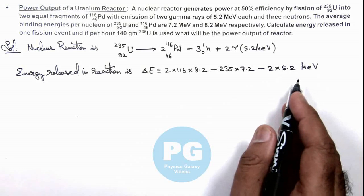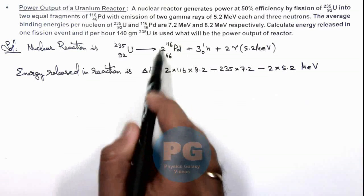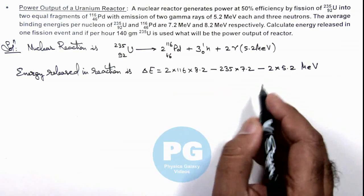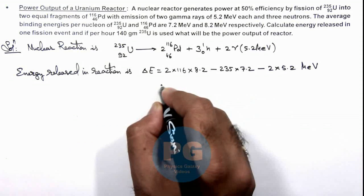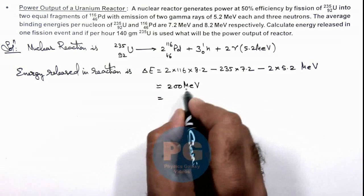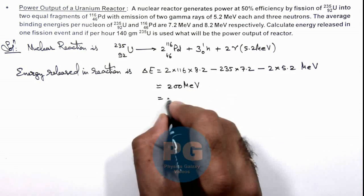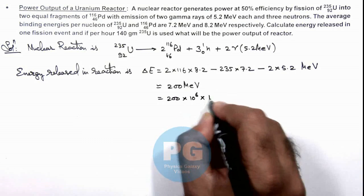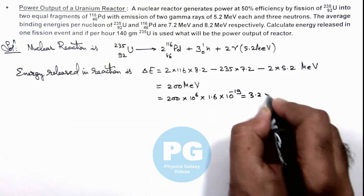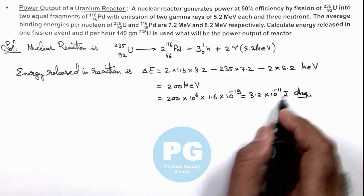This is the amount of energy — I have simply calculated by subtracting the amount of energy consumed in making palladium and the amount of energy absorbed by uranium, and the released energy. On simplifying, this value comes out to be approximately 200 million electron volts, which equals 200 into 10 to the power 6 multiplied by 1.6 into 10 to the power minus 19, giving us 3.2 into 10 to the power minus 11 joules.